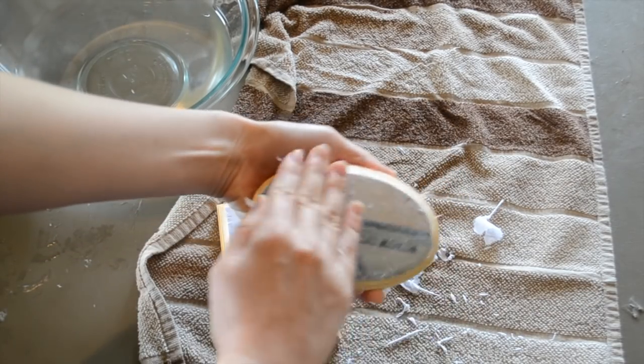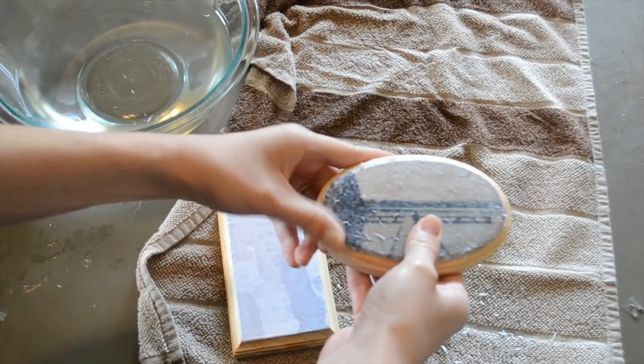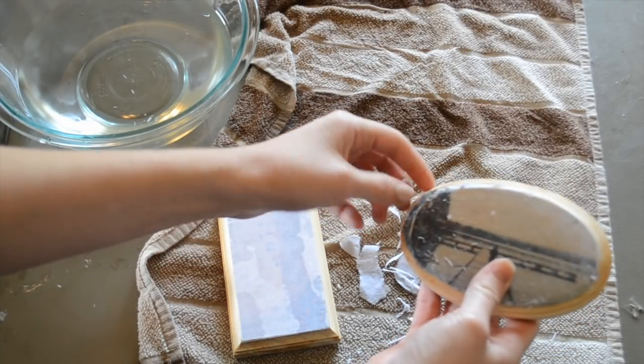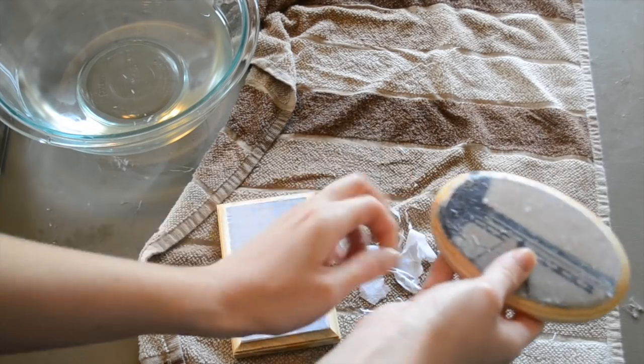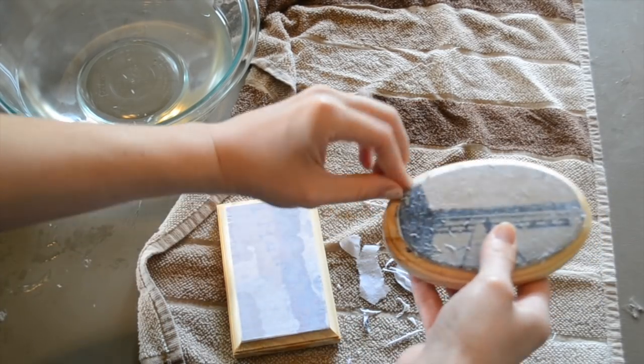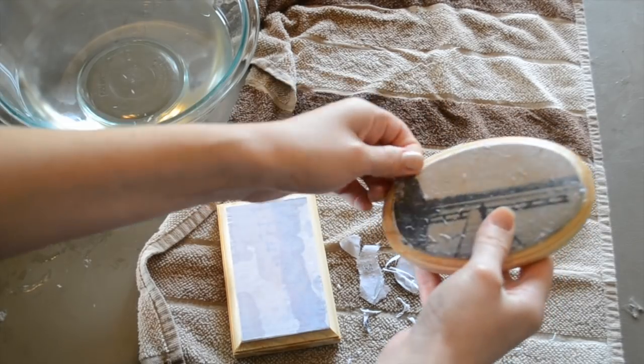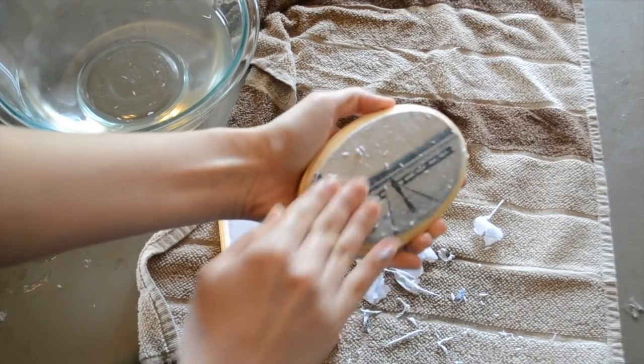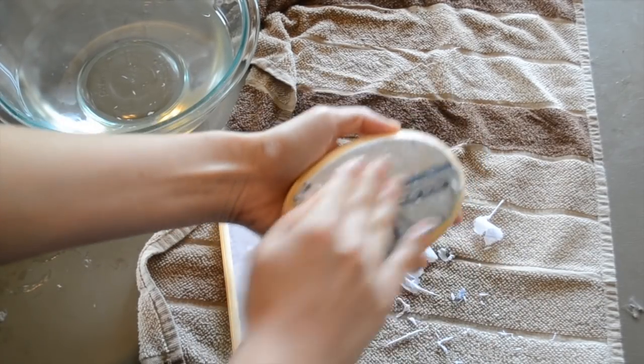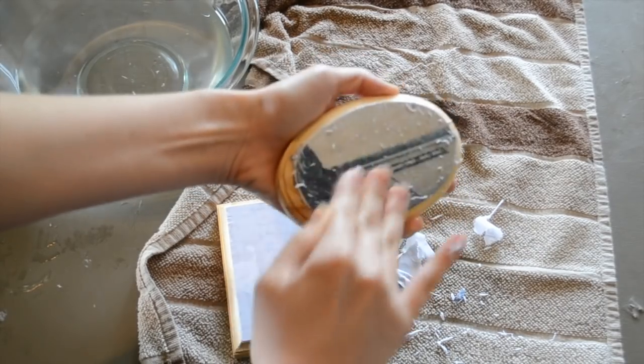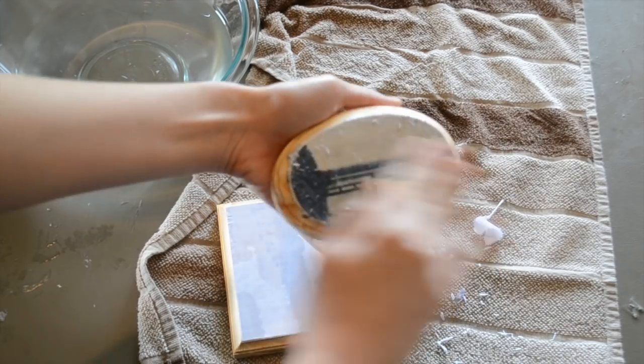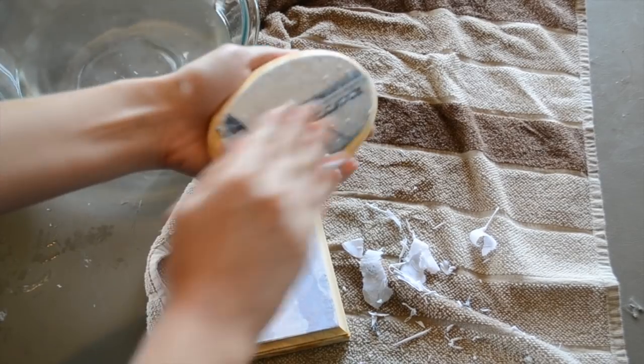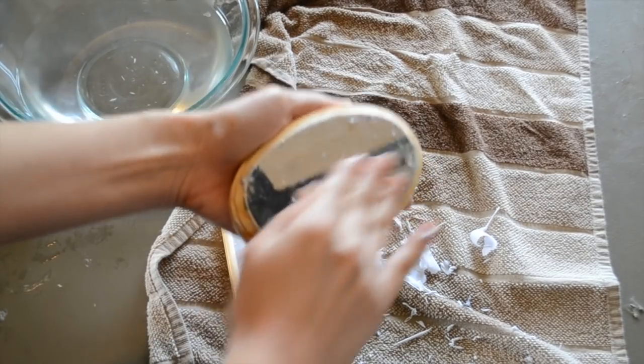That was a nice, clear transfer. That's exactly what we want, and that comes from using the right amount of Mod Podge. I'm just going to continue doing this until I'm happy with the clarity of my image. Once I get that initial coat off, we're going to set it aside and let it dry for about 15 to 20 minutes.